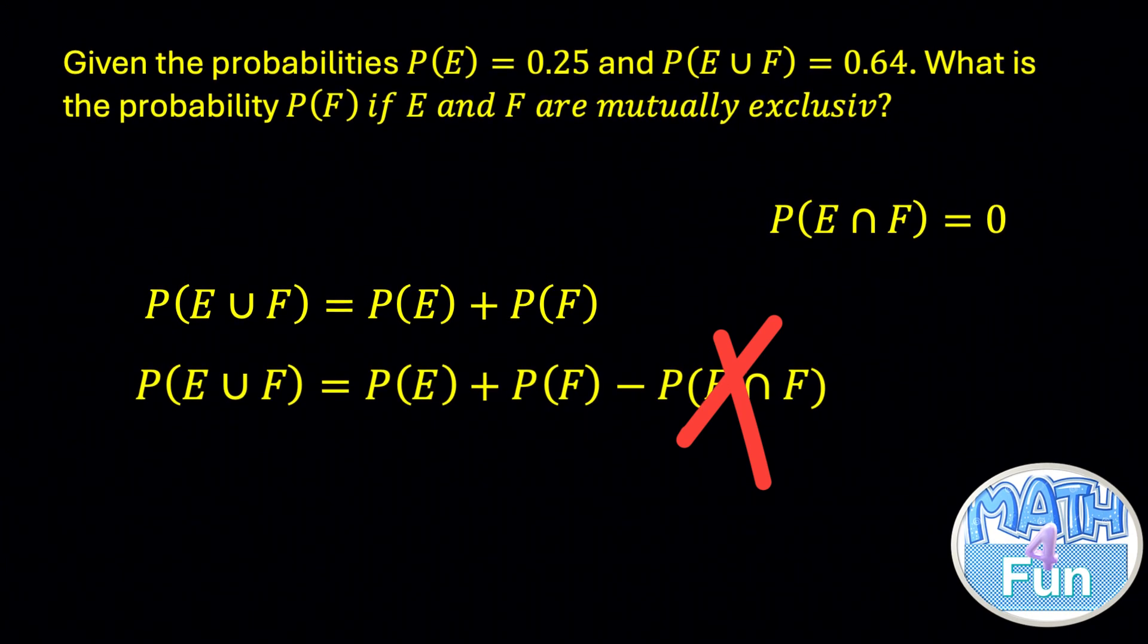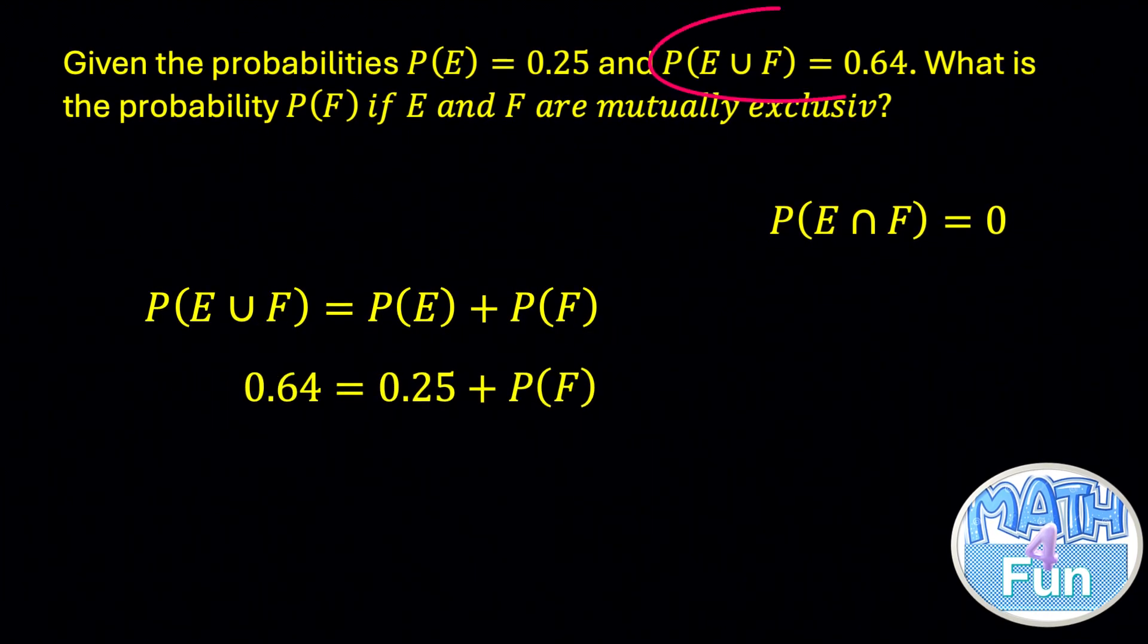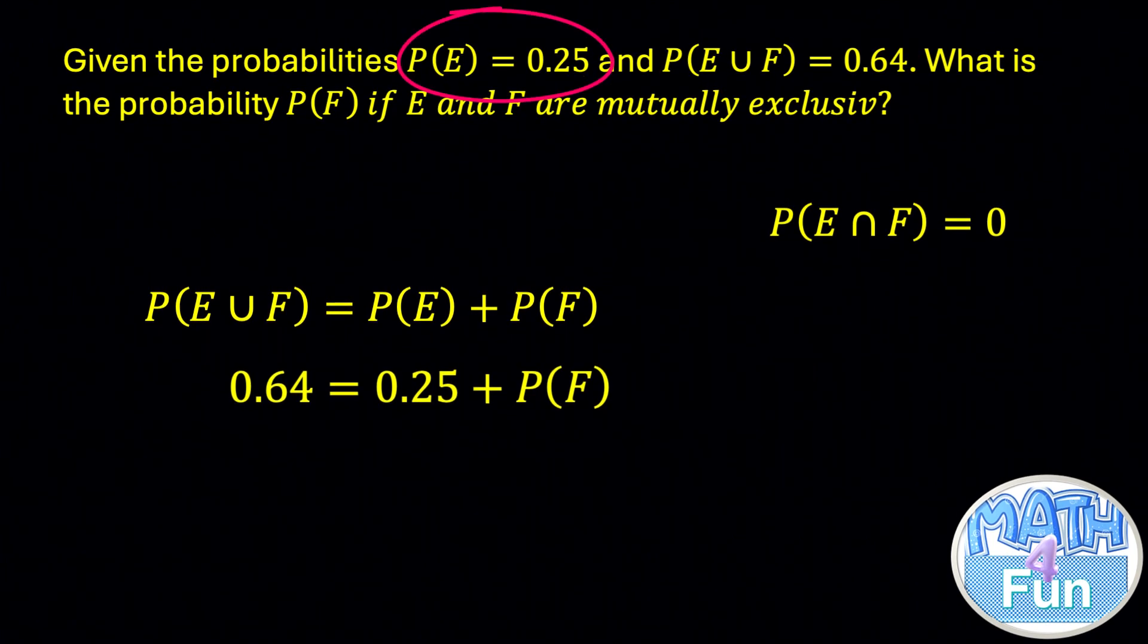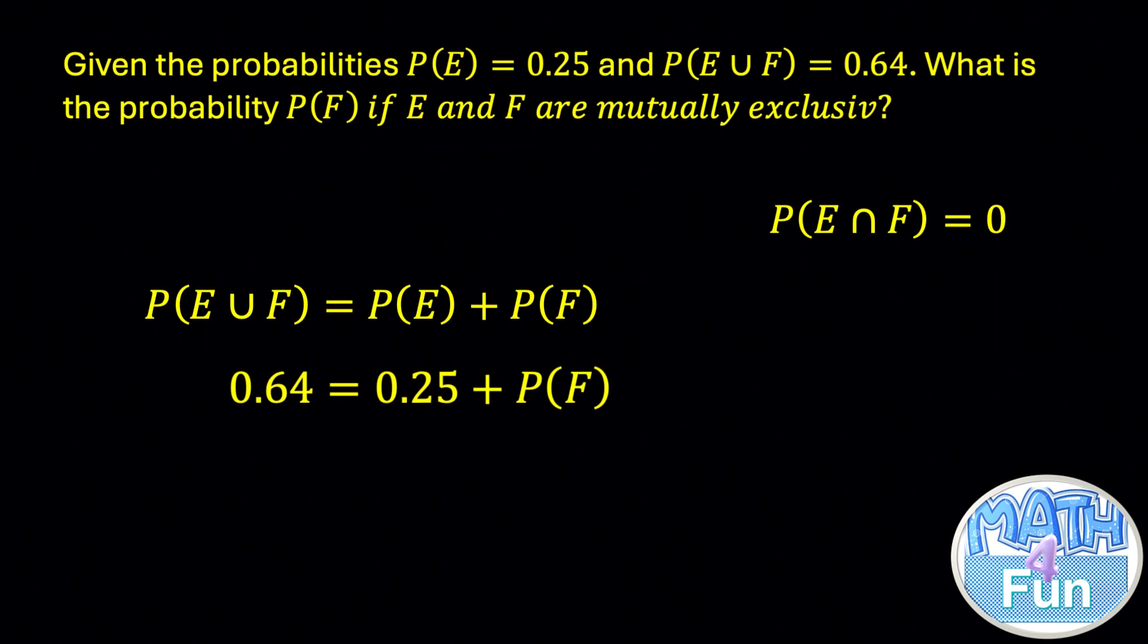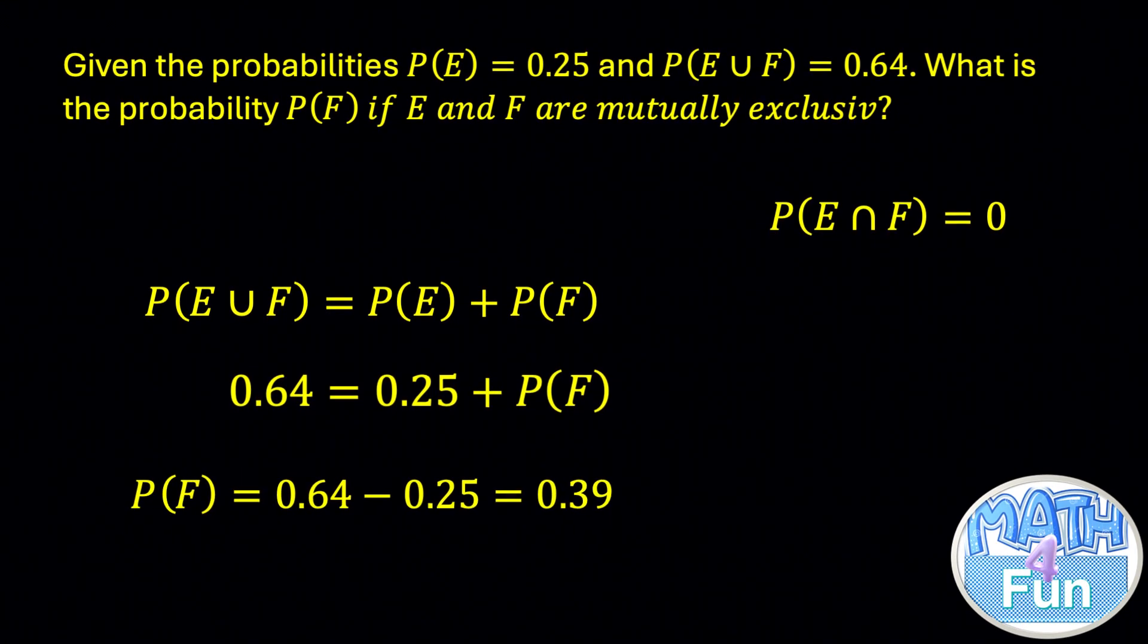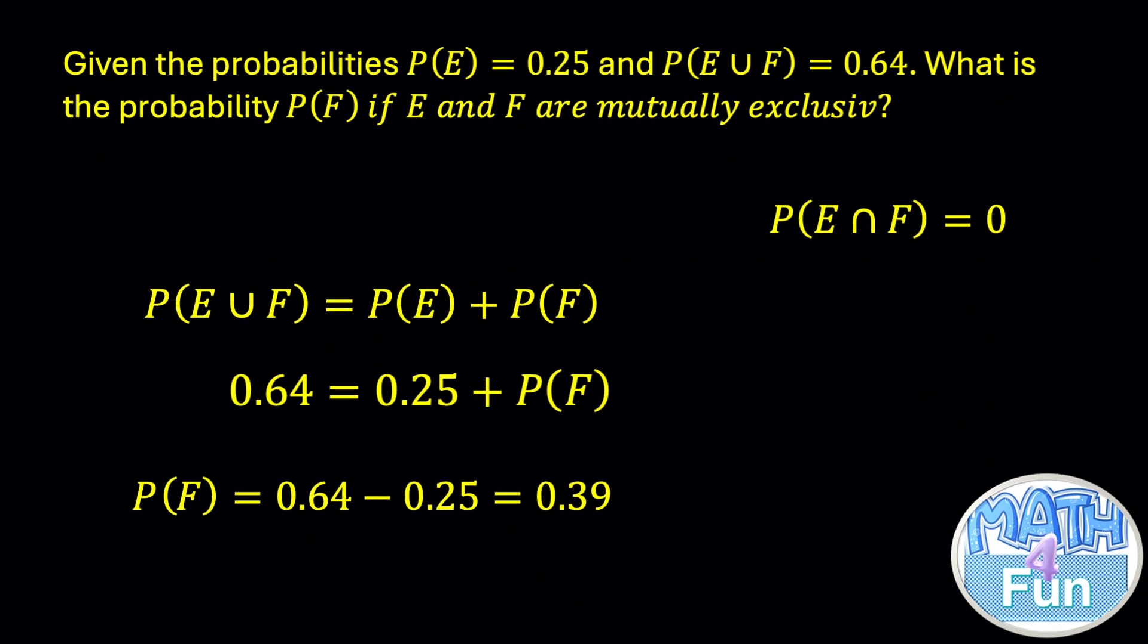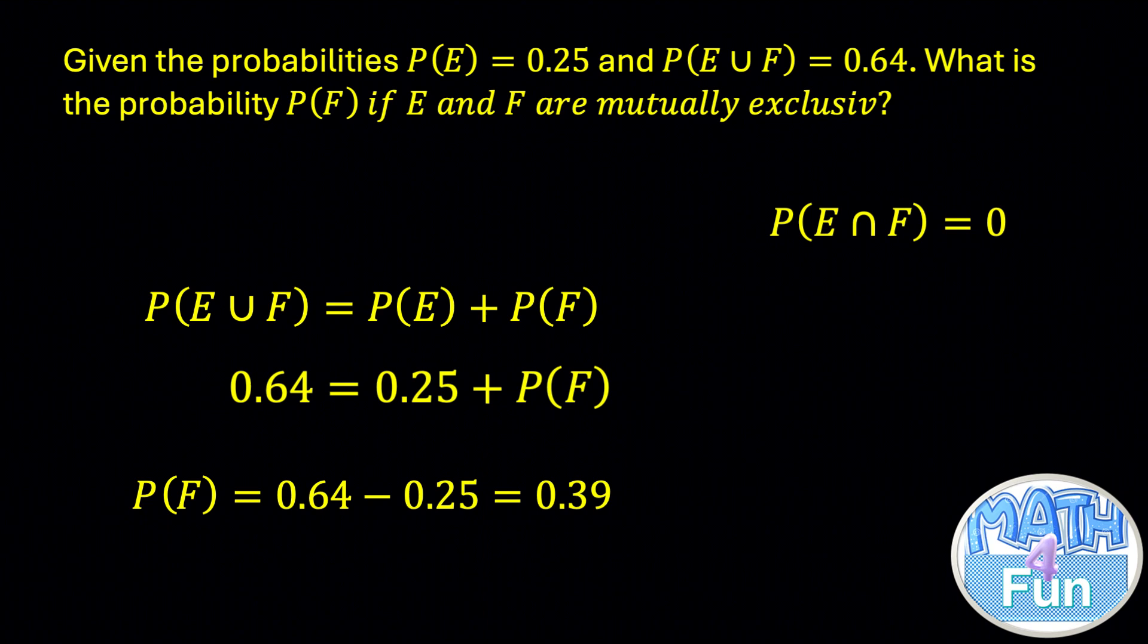So P(E union F) equal to P(E) plus P(F). Now we replace: P(E union F) is equal to 0.64, P(E) is equal to 0.25, and then we can find P(F). So in this case we can say P(F) is equal to 0.64 minus 0.25, which is equal to 0.39. Therefore, the probability P(F) if events E and F are mutually exclusive is equal to 0.39.